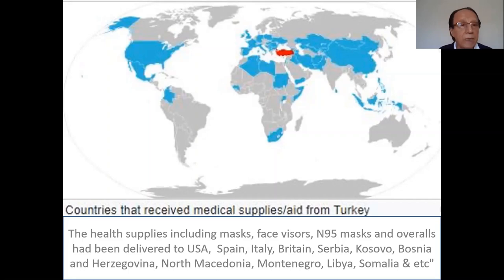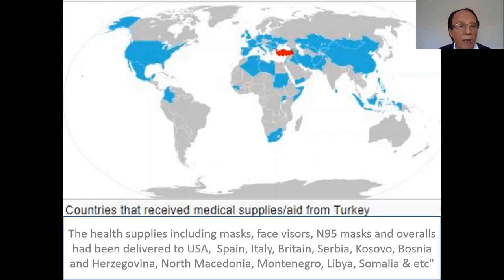At the beginning of this pandemic, the production of health supplies was not sufficient. Many countries needed protective equipment. Turkey produced enough amounts and sent them to many countries, including the United States. The Minister of National Education initiated a program involving students and teachers of industrial high schools, along with volunteers, to ensure the supply of masks.